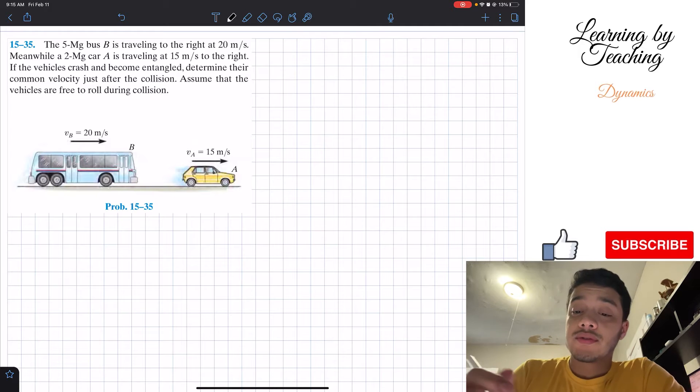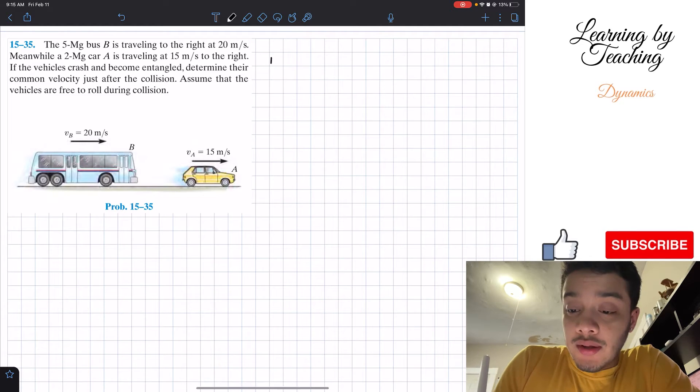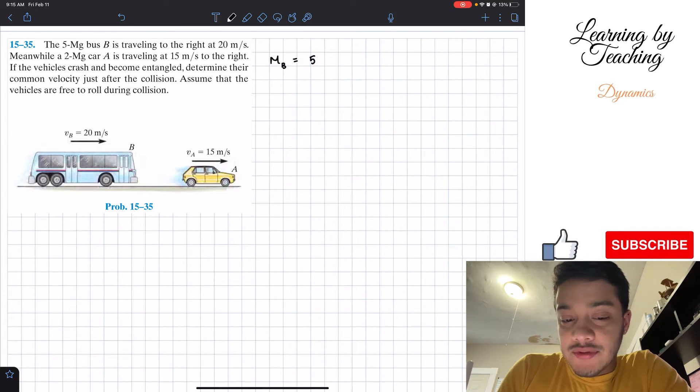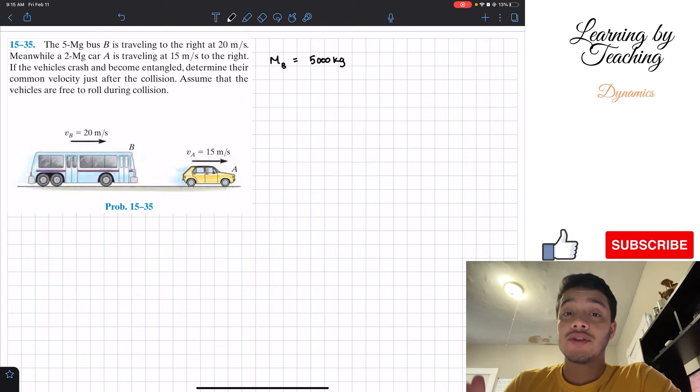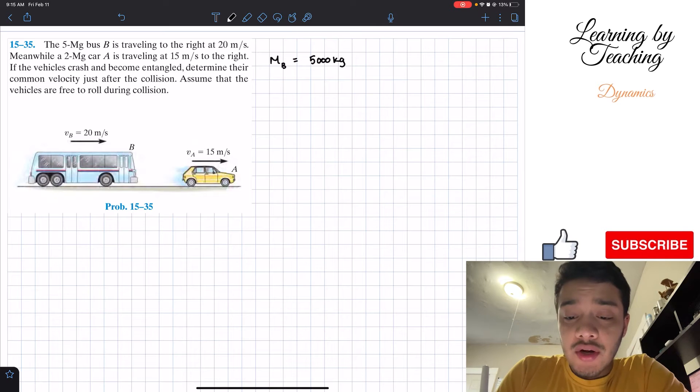As always, let's start by writing out our givens. The mass of the bus B is equal to 5 megagrams. If we convert these 5 megagrams into kilograms, we're going to end up with 5000 kilograms. The reason why I'm doing this is because kilograms is more of a standardized unit for SI units. They're also giving us that the velocity of this bus B is equal to 20 meters per second.